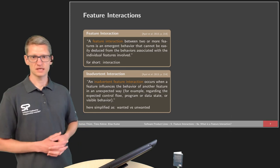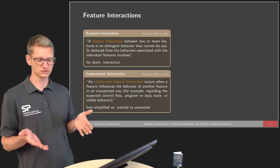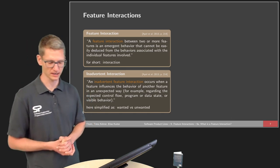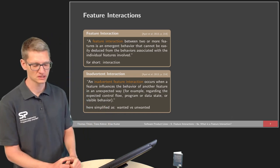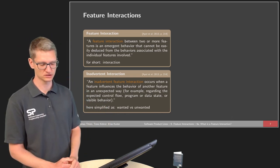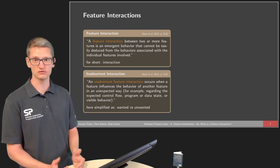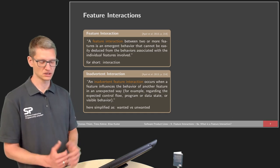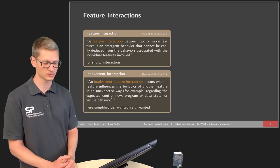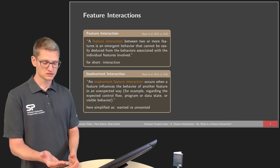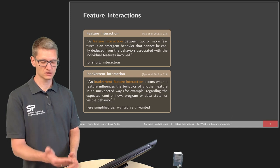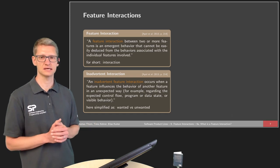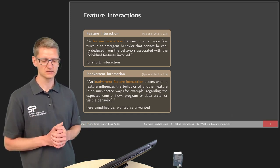You've seen several examples of feature interactions now. Let's step back and introduce a formal definition. A feature interaction between two or more features is an emergent behavior that cannot be easily deduced from the behaviors associated with the individual features involved. That's a definition from the main book used in this course by Apel and others. For short, we will call this simply an interaction.